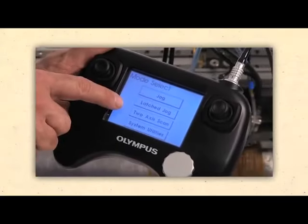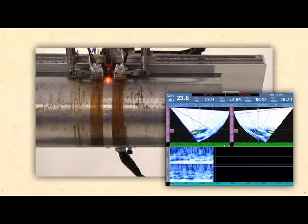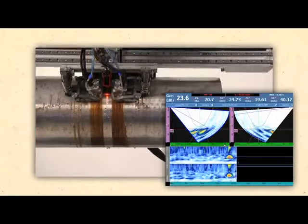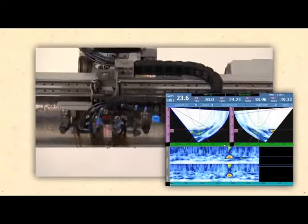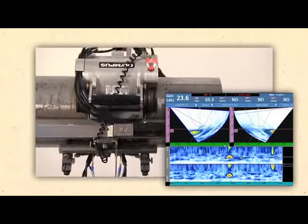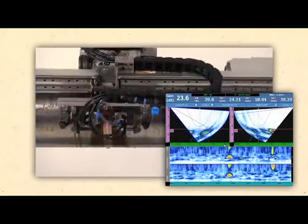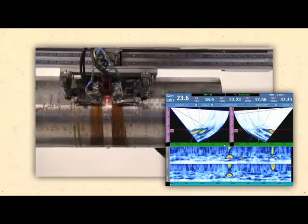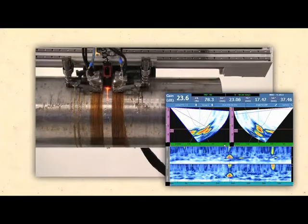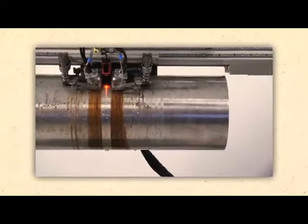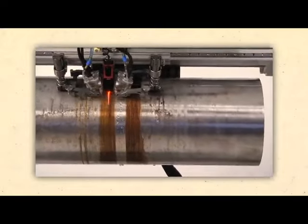A two-axis mechanized scanner provides full automated inspection of CRA welds to include one-line scans for detection and raster scanning for improved flaw sizing and characterization.